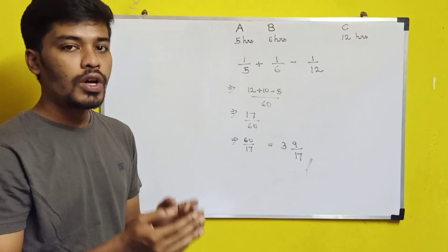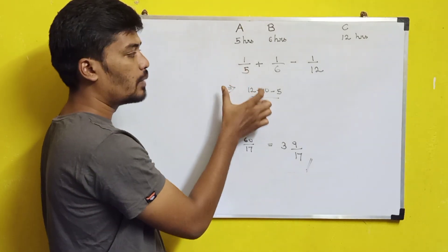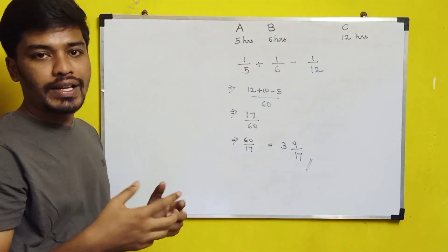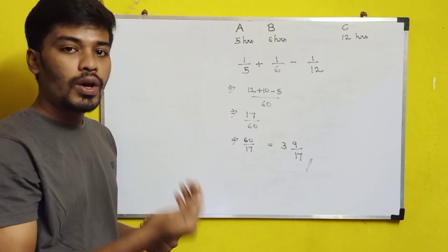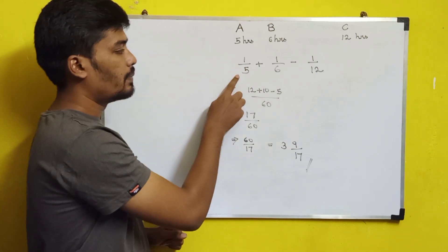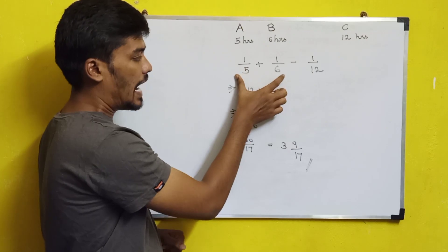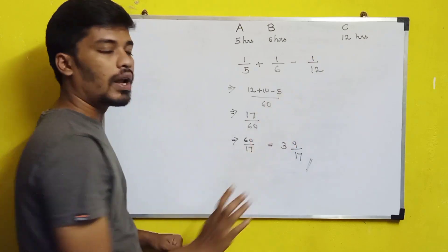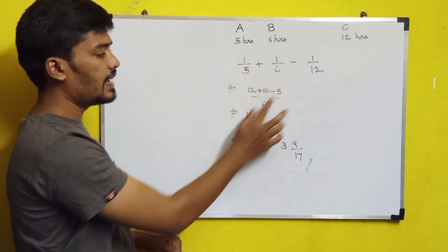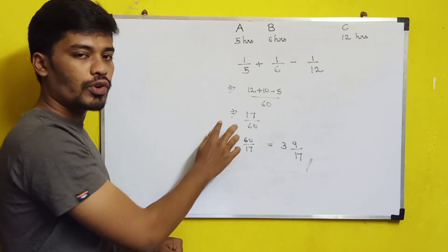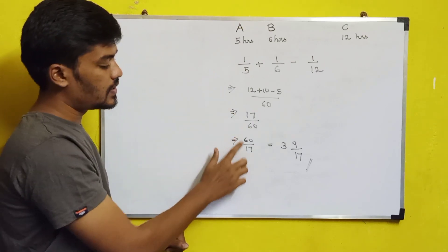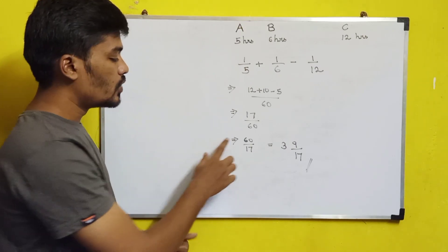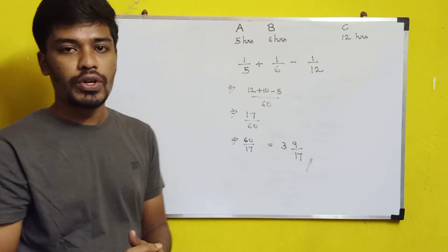We need to find how long it takes to fill the tank with all three pipes open. Using time and work concepts — inversely proportional — the combined rate is 1/5 plus 1/6 minus 1/12. Solving the LCM, this gives 17 by 60. So the total time to fill the tank is 60 by 17, which as a mixed fraction is 3 and 9/17 hours.